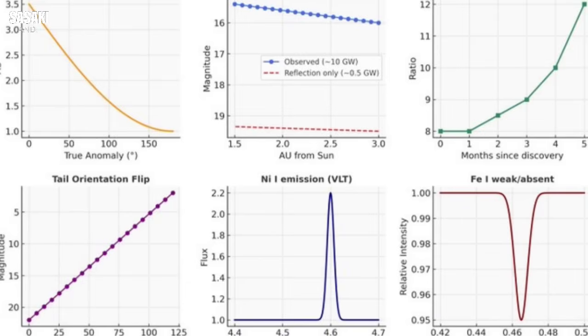Finding nickel without significant iron is what makes this genuinely unprecedented for comets. Usually we assume these metals are locked up together in dust grains, and they get released together when those grains sublimate, when they turn to gas as the comet heats up. But with 3I Atlas, something else must be going on. The leading idea now involves highly volatile carriers. Specifically, something like nickel tetracarbonyl.